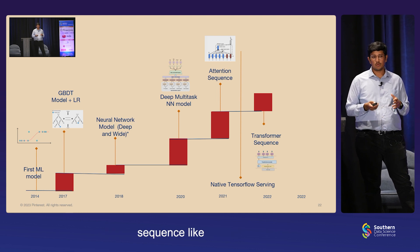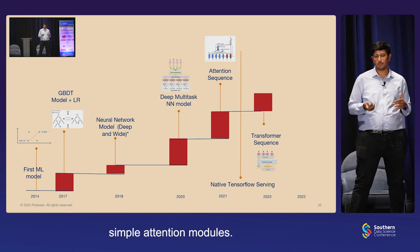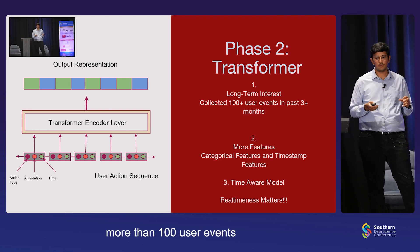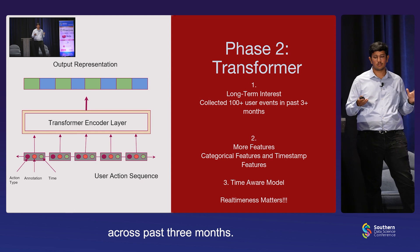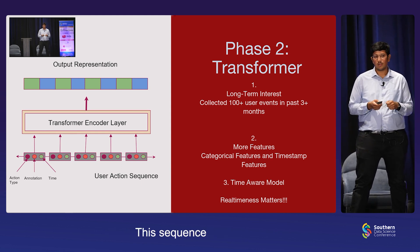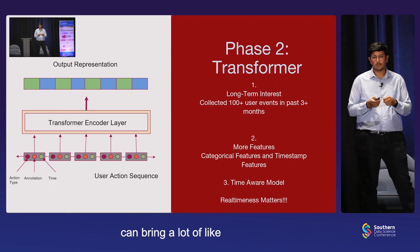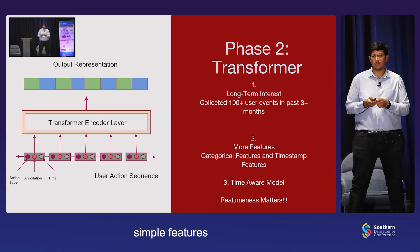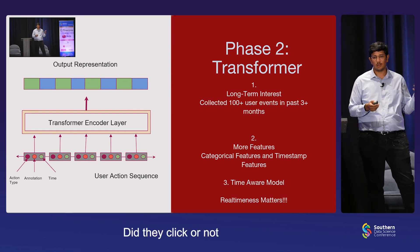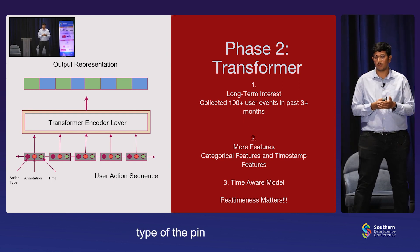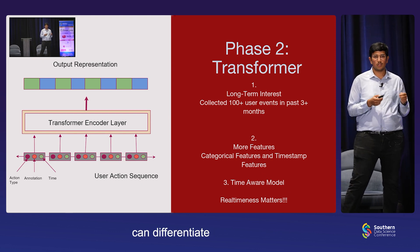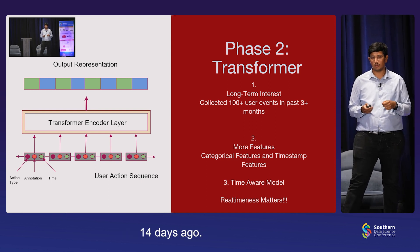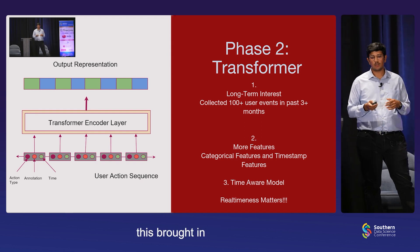After that, we went to a transformer-based sequence — transformers could be a better encoder instead of just using simple attention modules. Whatever the sequence we have, we collected more than 100 user events across the past three months. This sequence can bring a lot of latency issues, so to counter that, the sequence only had a few simple features such as what's the action type, did they click or not, and what is the category type of the pin. We also introduced the notion of time so that we can differentiate between something that happened a day ago versus 14 days ago. This time awareness brought in even further gains.